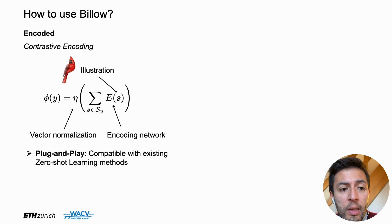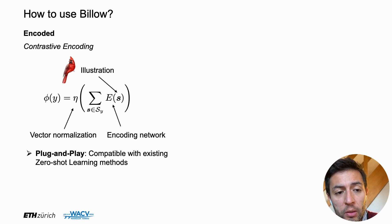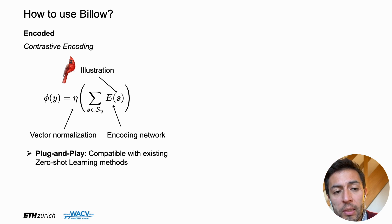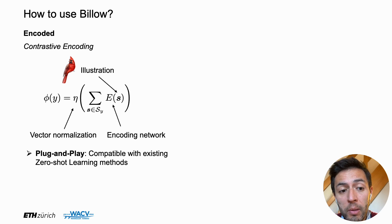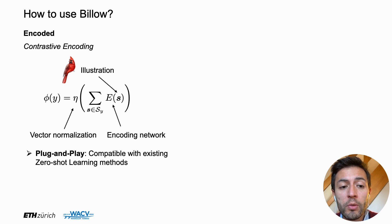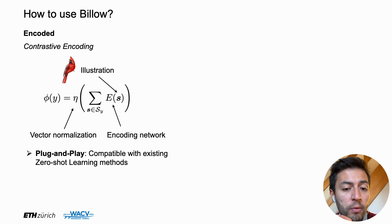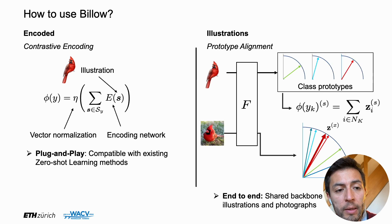How do we propose to use this dataset? One approach is contrastive encoding: you take an illustration, pass it through an encoding network, aggregate over all illustrations for a given class, and compute a class embedding for all species in the dataset. This is nice because it is plug-and-play and compatible with all prior zero-shot learning methods, which expect a fixed class embedding vector fed through the network.